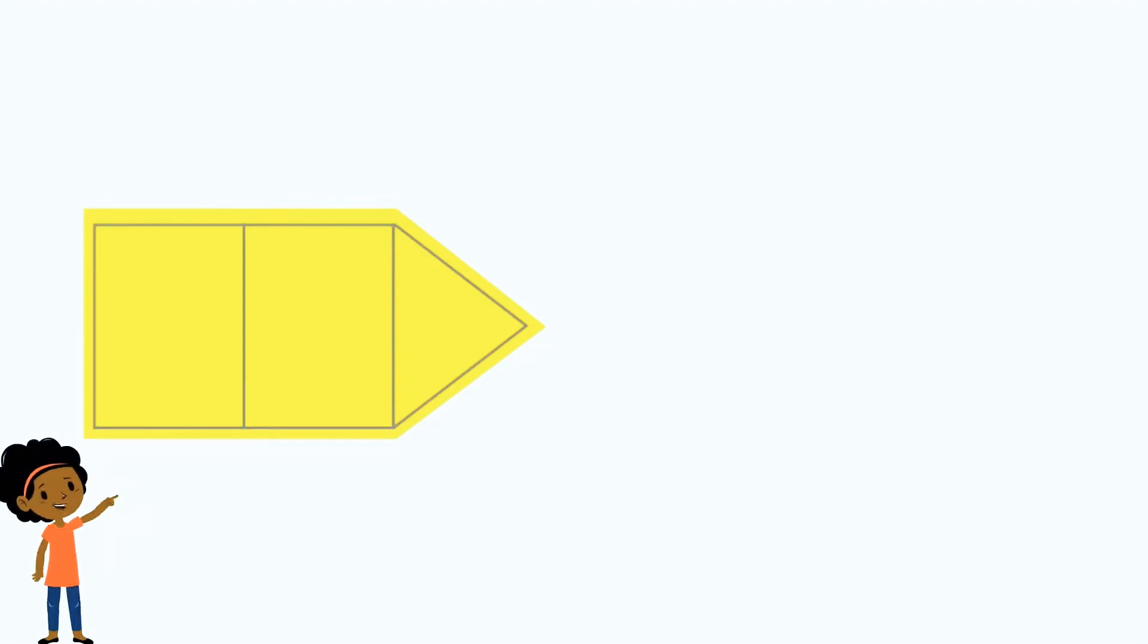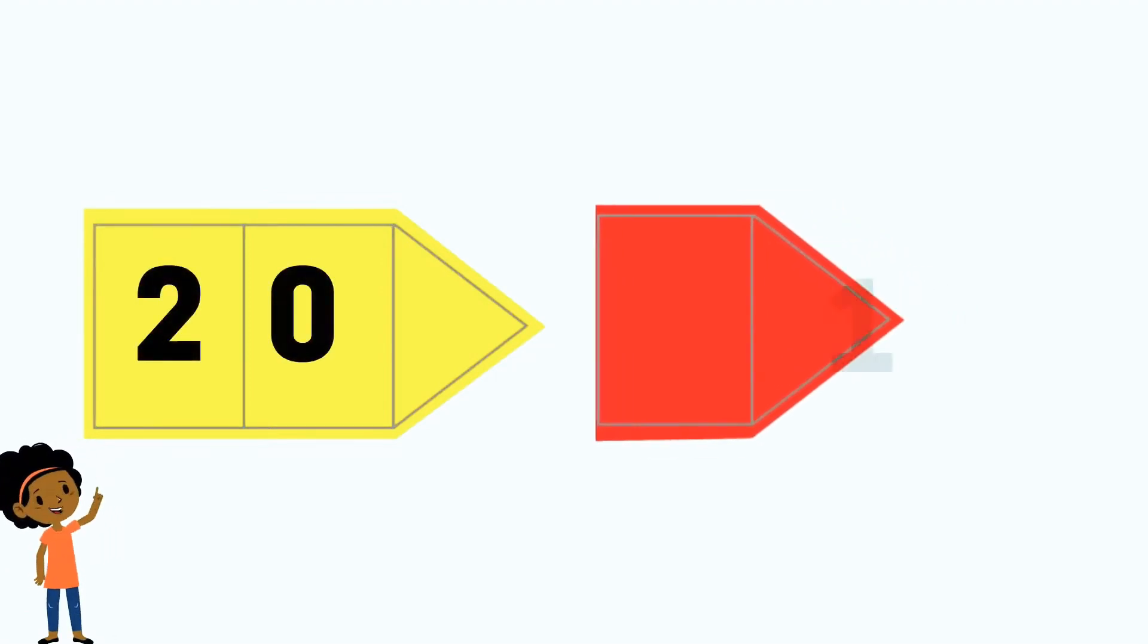Let's use arrow cards to represent 21. We will need two 10s and 1 unit.